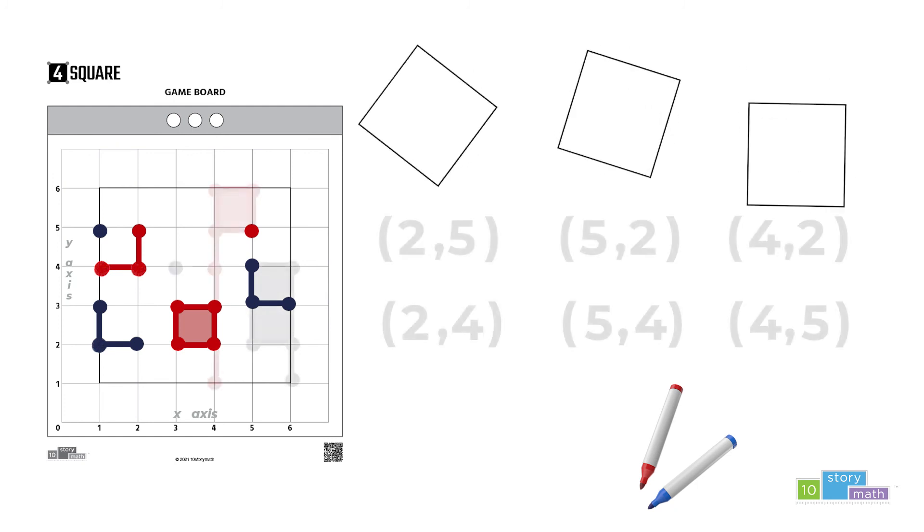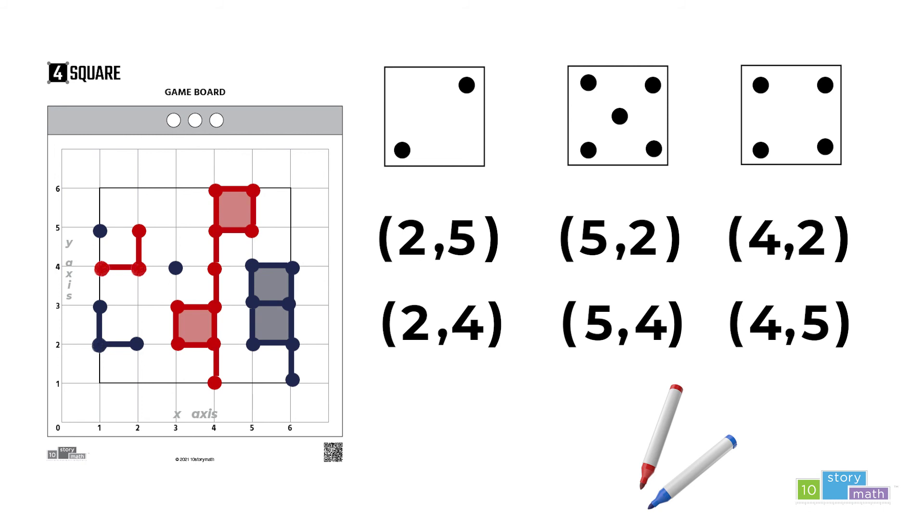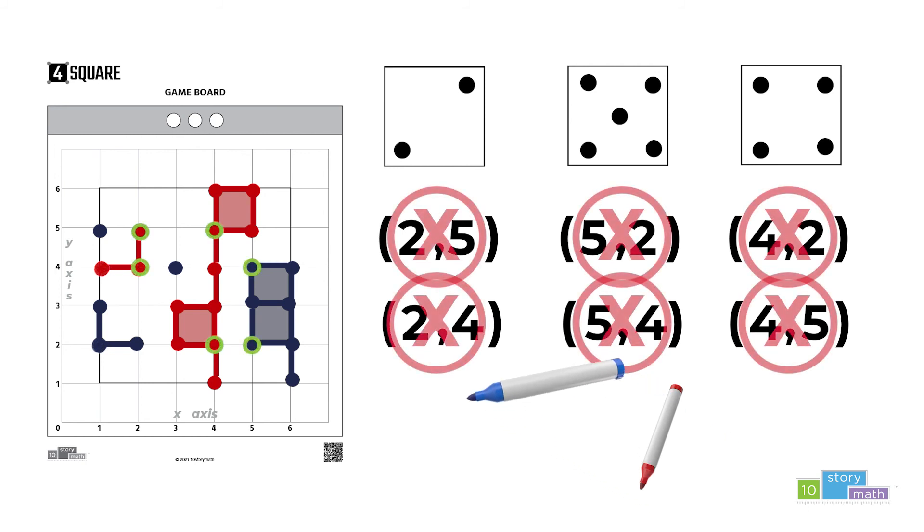If you roll the dice and all the possible ordered pairs are already taken, like in this example for the blue team, then fill in one of the circles at the top of the board.